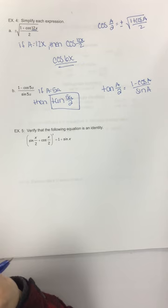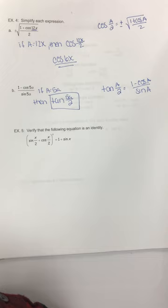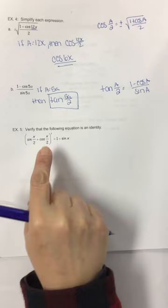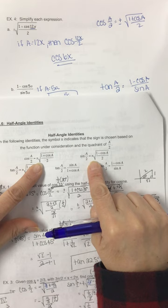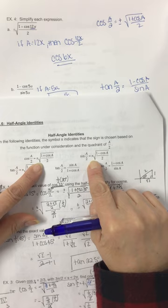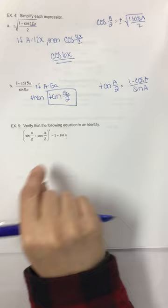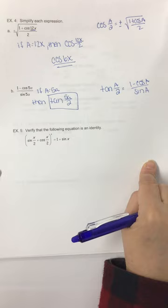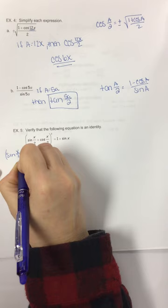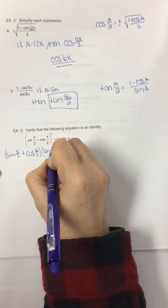Last problem says to verify. Looking at sine of x/2 and cosine of x/2, trying to add those together using the sine and cosine half angle identities would be very difficult because of the square roots. So instead of substituting the identity, since the expression is squared, we can expand it.